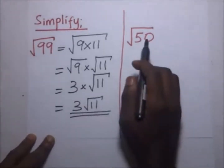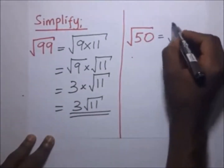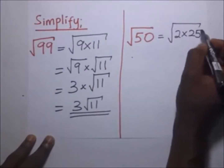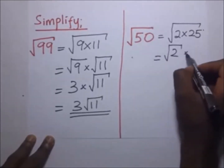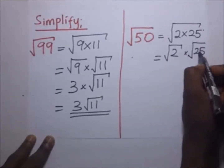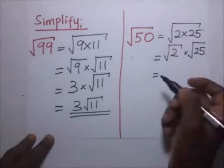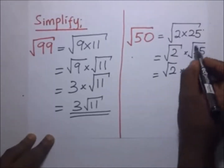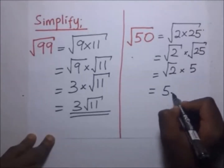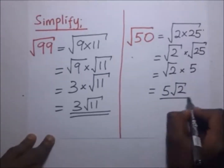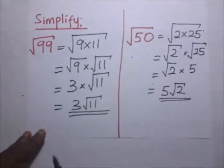The square root of 11 is irrational, so we leave it in surd form. The final answer is 3√11, and this is the simplification of that entire surd — a mixed surd. For our second example, the square root of 50 equals the square root of 2 times 25, which is the same as the square root of 2 times the square root of 25.